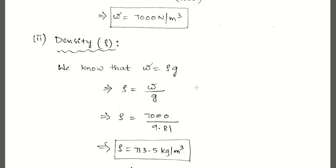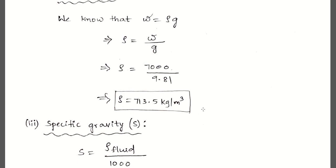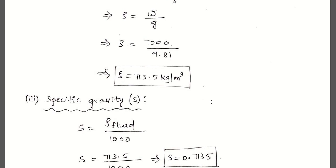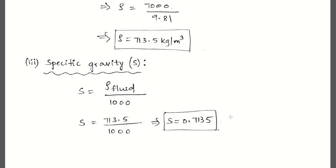For density, mass is not directly given, so use the formula w = rho × g, which gives rho = w/g = 7000 / 9.81 = 713.5 kg/m³. For specific gravity, use S = density / 1000 = 713.5 / 1000 = 0.7135. This problem shows how formulas must be applied flexibly based on what is given and what is required.